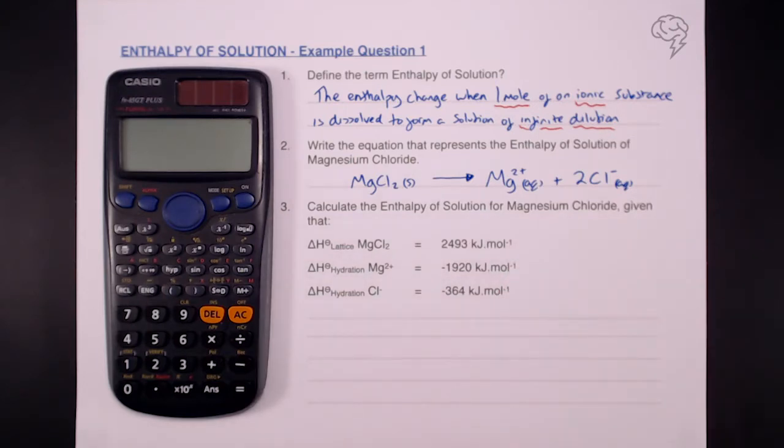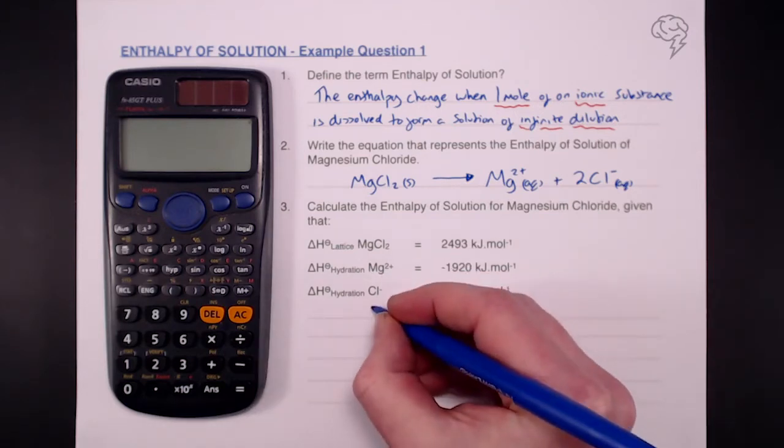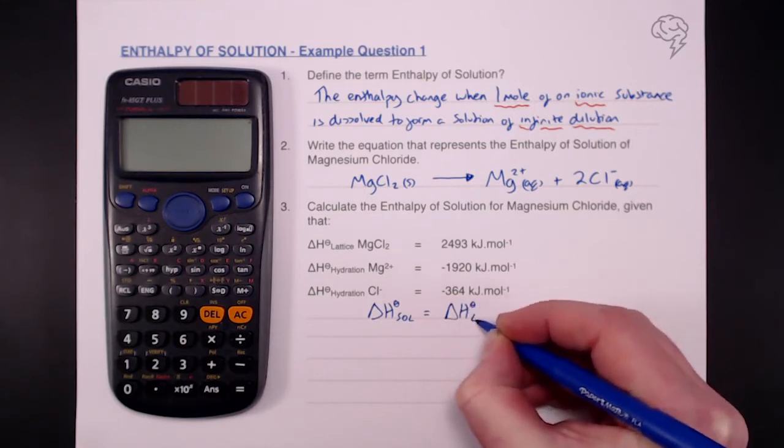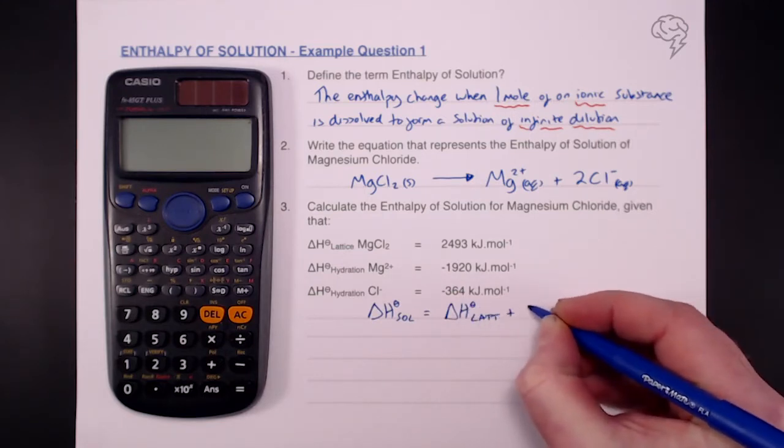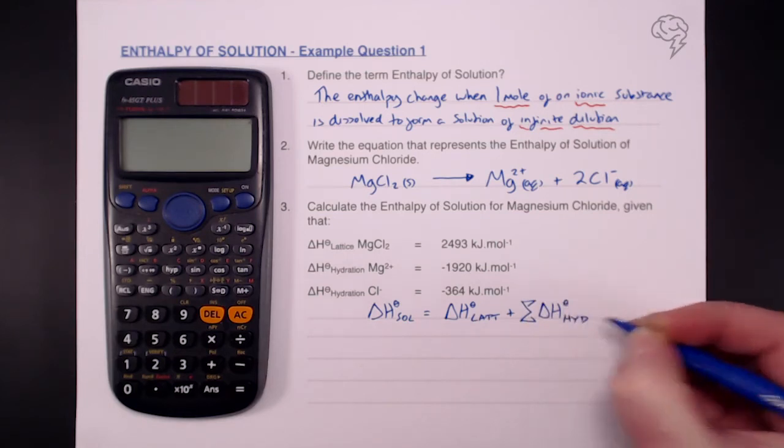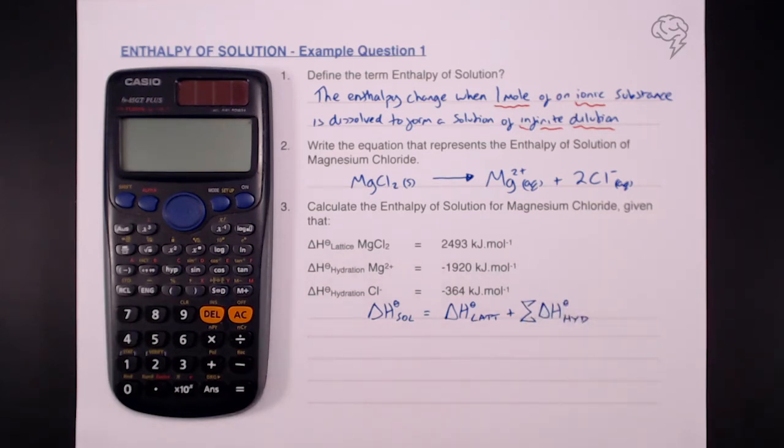So what do we need to do first? Always write out your equation, which is delta H solution equals delta H lattice breaking, don't forget positive, plus the sum of our delta H hydrations. I would always just get in the habit of writing the full equation out first, and then we can start putting some numbers in.